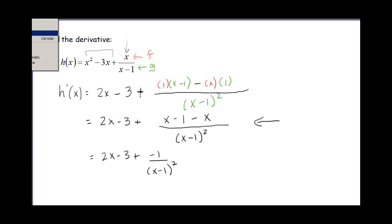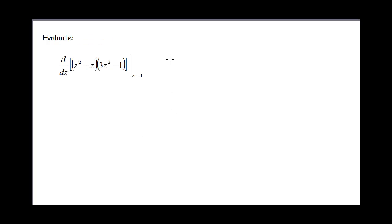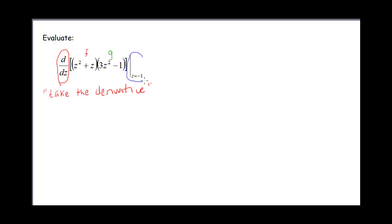Let's do one more quick example. This one has the notation d/dz, which means take the derivative — it's just an operator. We actually don't need to use the quotient rule on this one, because this one has just a product. I'm going to let z squared plus z be my f, and 3z squared minus 1 be my g. There's also a vertical bar on the right with z equals negative 1, which means I'm supposed to evaluate at z equals negative 1 — so once I find the derivative, I just need to plug in negative 1.